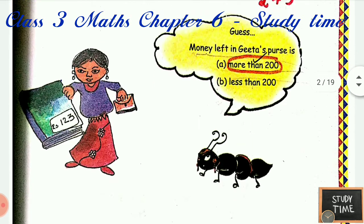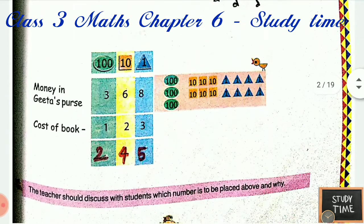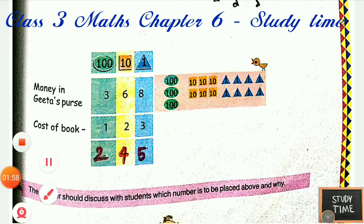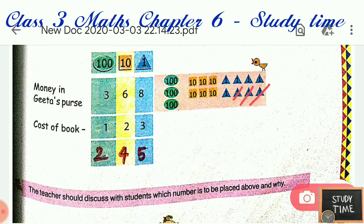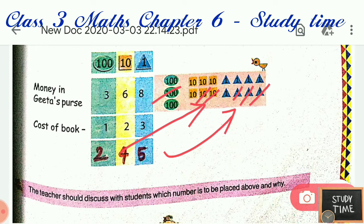For the next subtraction, what you have to do is: 8 minus 3 gives you 5, then 6 minus 2 gives you 4, then 3 minus 1 gives you 2. The answer is 246.